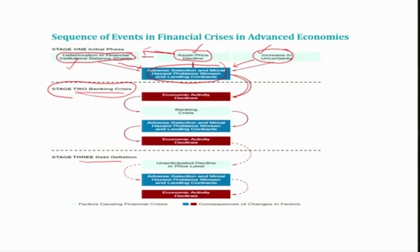In Stage 2, banking crisis: due to deteriorating balance sheets and tougher business conditions, some financial institutions become insolvent when their net worth becomes negative. Many firms that have borrowed from banks are unable to pay off their loans, so banks end up with many non-performing assets. As a result, banks' NPAs increase, banks' net worth declines. When banks' net worth declines, some banks won't be able to pay off depositors or other creditors and will go out of business.